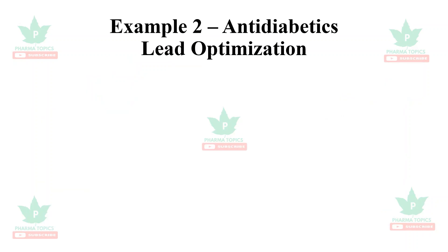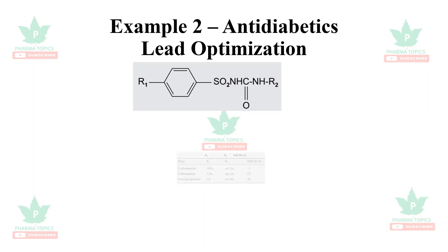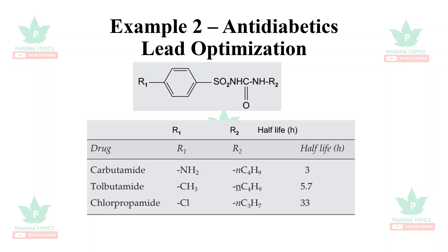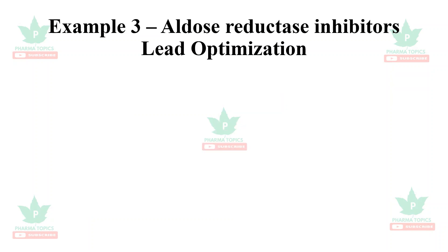The second example is antidiabetics. A sulfonylurea derivative serves as the lead, where R₁ and R₂ are substituted to yield different antidiabetic compounds such as tolbutamide and chlorpropamide. When R₁ is chlorine and R₂ is a three-carbon chain, the half-life of the compound increases significantly — illustrating lead optimization for improved pharmacokinetics.